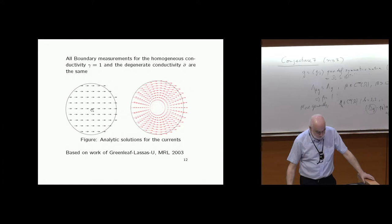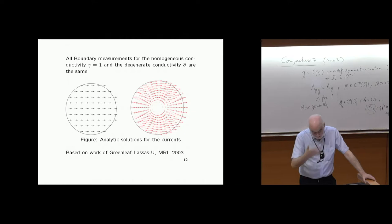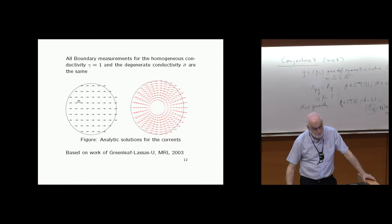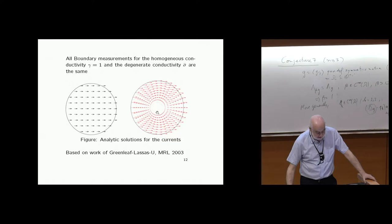What Greenleaf, Lassas, and I did was build conductivities so that currents go around — like what we want for light. On the left with conductivity one, currents go straight through. We build a conductivity so currents go around, but when observed on the boundary it looks exactly the same as on the left. Everything inside is invisible. That's how to achieve invisibility, and I'll explain how to build these conductivities.